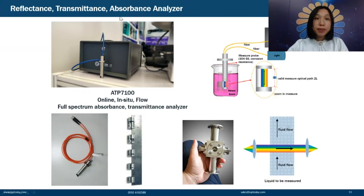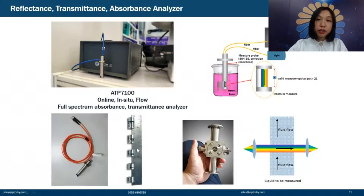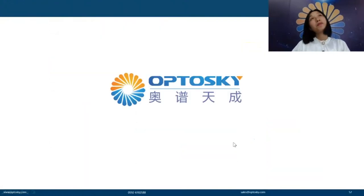Finally, the ATP-7100 is a reflectance, transmittance, and absorbance analyzer that enables online, in-situ, and flow-through monitoring. The detector zone has a measurement optical path, a probe is inserted into the sample, and the light source connects via fiber. The spectrometer analyzes the resulting spectrum. The probe configuration can be changed to realize online measurement in different process environments. That concludes the presentation — thank you.